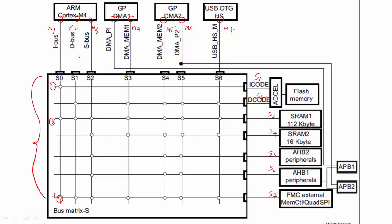Now let's talk about the dCode bus. For the dCode bus there are also three connections: it can talk to the second slave, the third slave, and the seventh slave. This path indicates that the dCode bus fetches read-only data or data from flash memory over the dCode bus interface. It can also fetch data from SRAM1, but it cannot fetch data from SRAM2 — there is no connection.